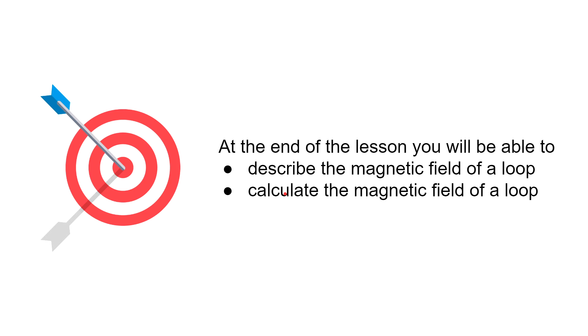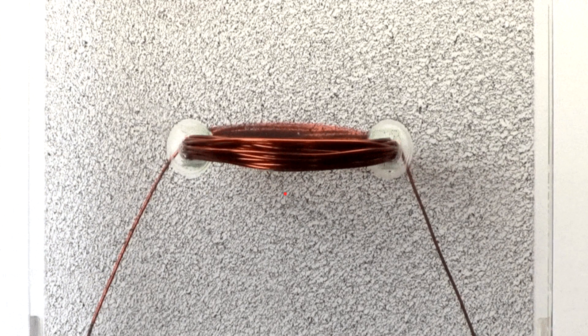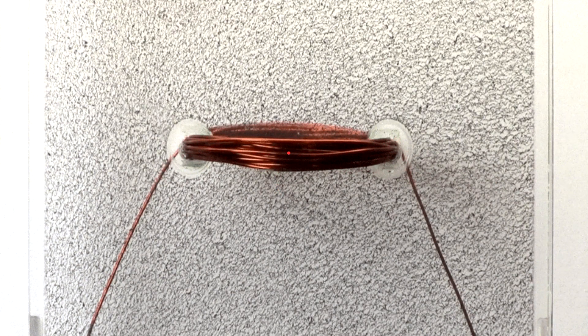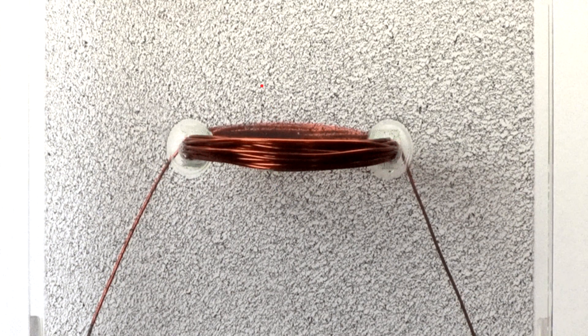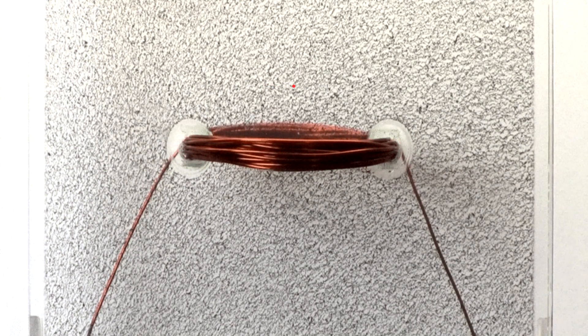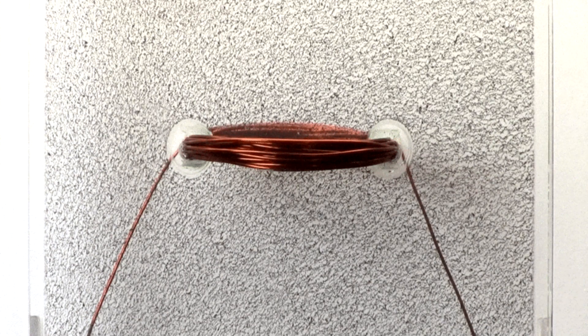Now before we start, let's do this demonstration. We have a loop which has around 15 turns and iron filings located in an oil. Let's connect the loop to a source of electricity and see what happens.